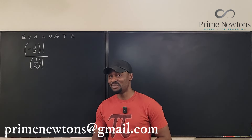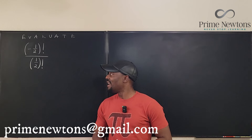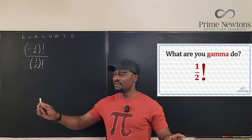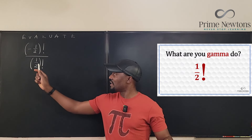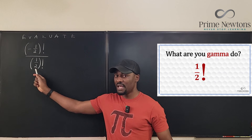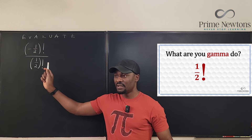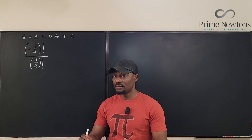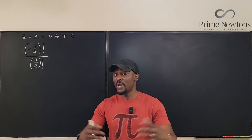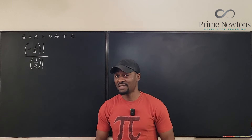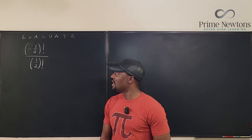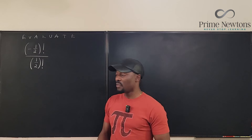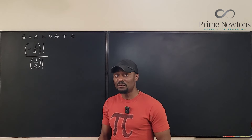Let's play with these numbers. In the previous video I showed you that (1/2)! equals the square root of pi over 2. So now we have a quick class exercise: what would negative (1/2)! divided by (1/2)! be?